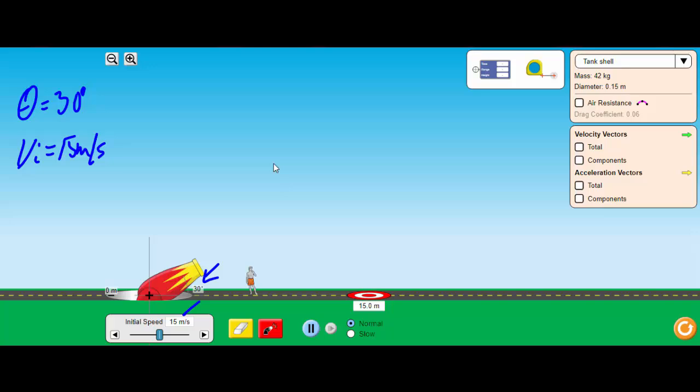So the first thing I want to do is draw a path here. Don't know if that's the actual path or not, but first thing I want to do, if that's 15, I need my X and my Y velocity.